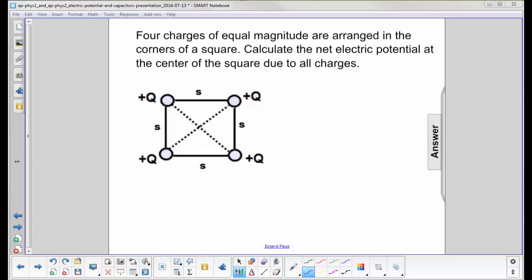Four charges of equal magnitude are arranged in the corners of a square. So here's our square. I know it doesn't look like one, but see, we put S for each side, so they're equal. We have four charges, and we want to find the net electric potential right here, right in the middle.